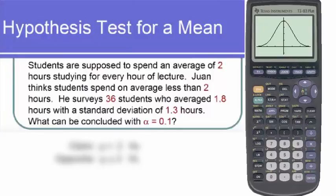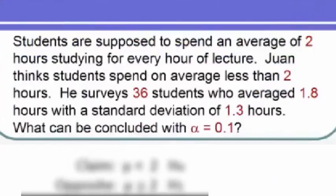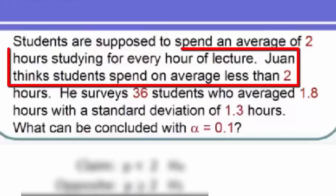Here we have a hypothesis test for a mean. The problem states that students are supposed to spend an average of two hours studying for every hour of lecture. However, Juan thinks that students spend on average less than two hours.